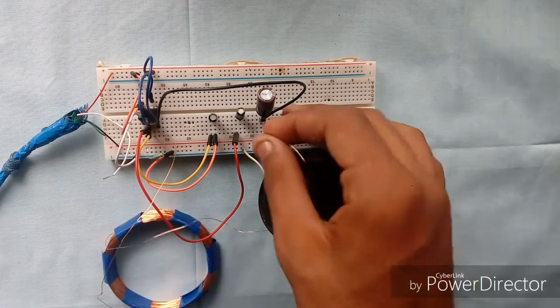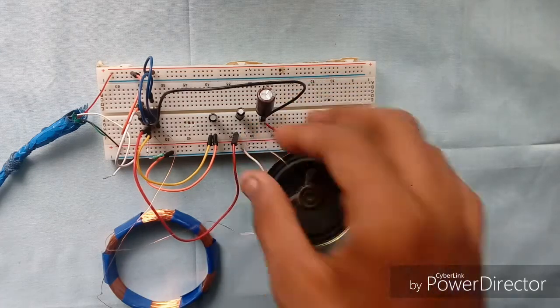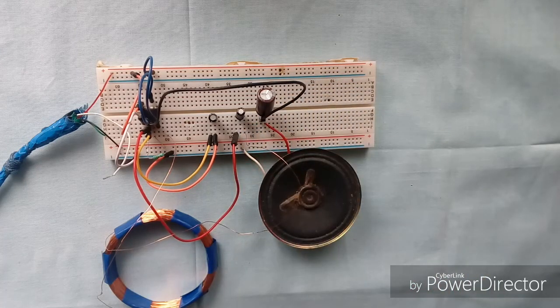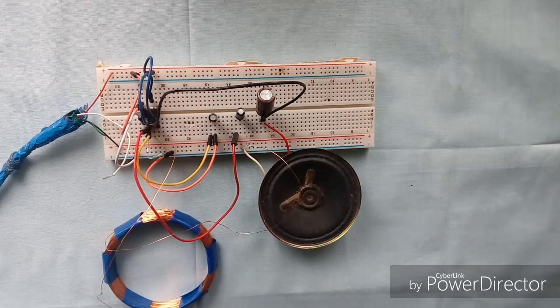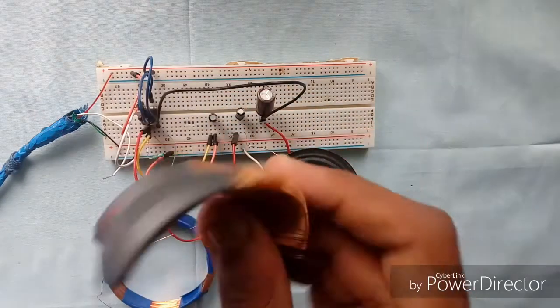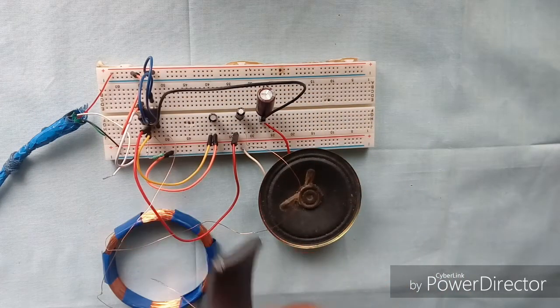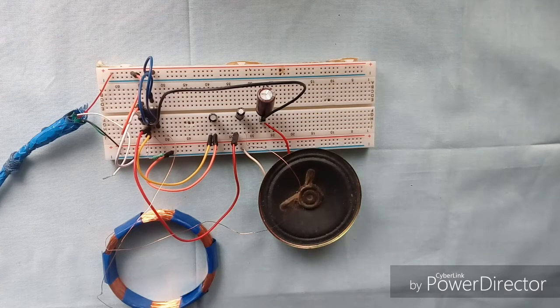Now if I remove the coil, as you can see the speaker starts to pop. And connecting the coil again, it works. So if you are getting some difficulties during the build, you can always check in this manner. Now I have this piece of metal, and if I place it on the coil, then it should change the sound of the speaker.